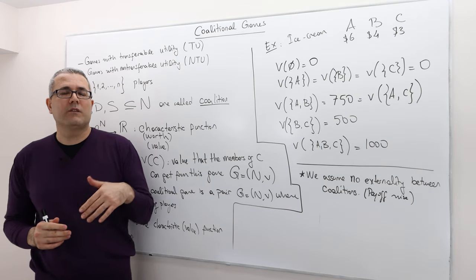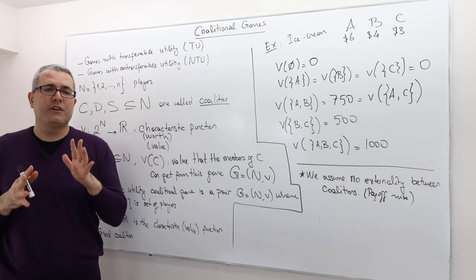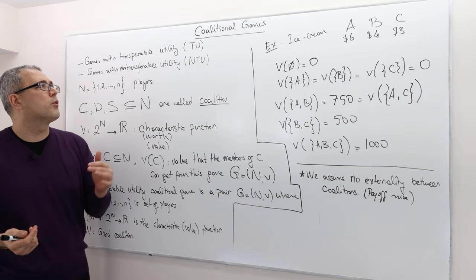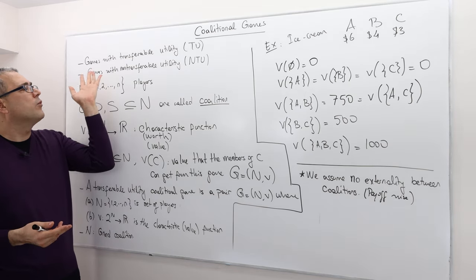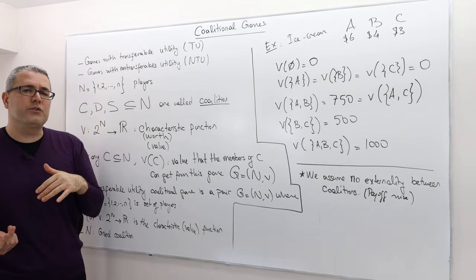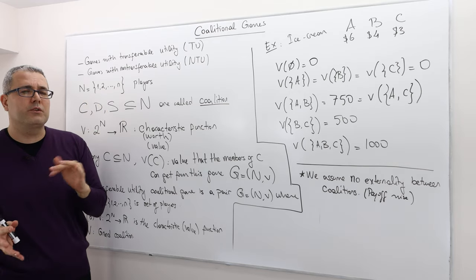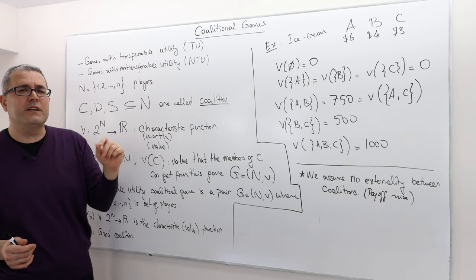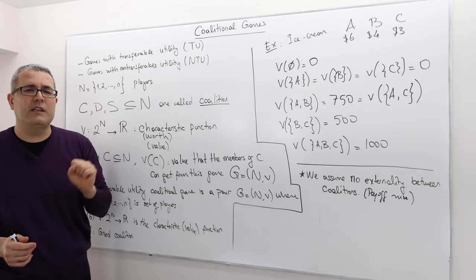Before I start, I would like to distinguish two coalitional games. This distinction is very important. We are going to call some games as games with transferable utility and others games with non-transferable utility. If it is a transferable utility game we denote it by TU, otherwise we denote it NTU.